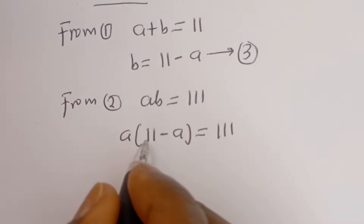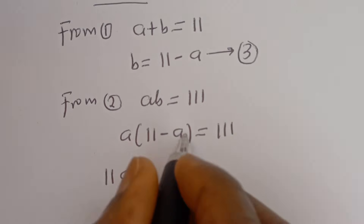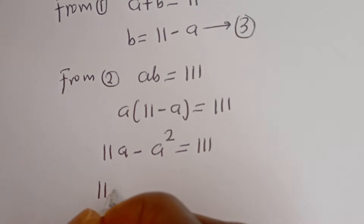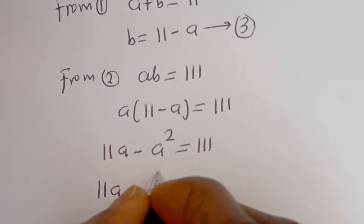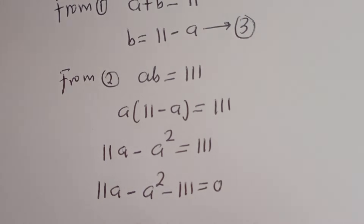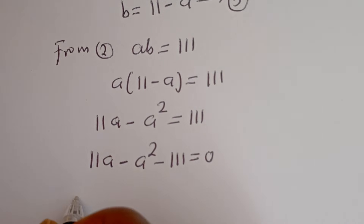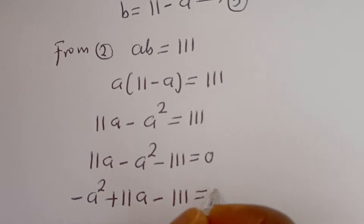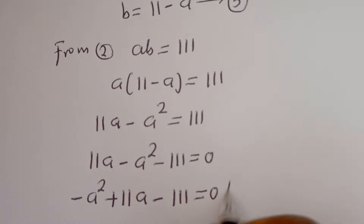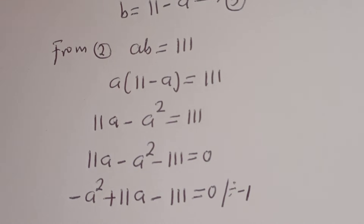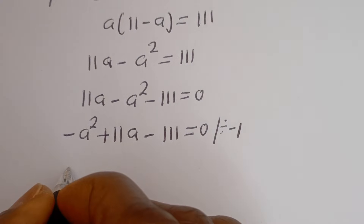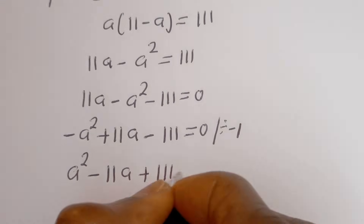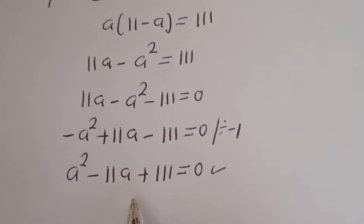Let's open the bracket: A multiplied by 11 is 11A, minus A multiplied by A is A squared, is equal to 111. Then we have 11A minus A squared minus 111 is equal to 0. Putting this in standard form: minus A squared plus 11A minus 111 equals 0, or A squared minus 11A plus 111 equals 0. This is a quadratic equation — let's solve using the quadratic general formula.